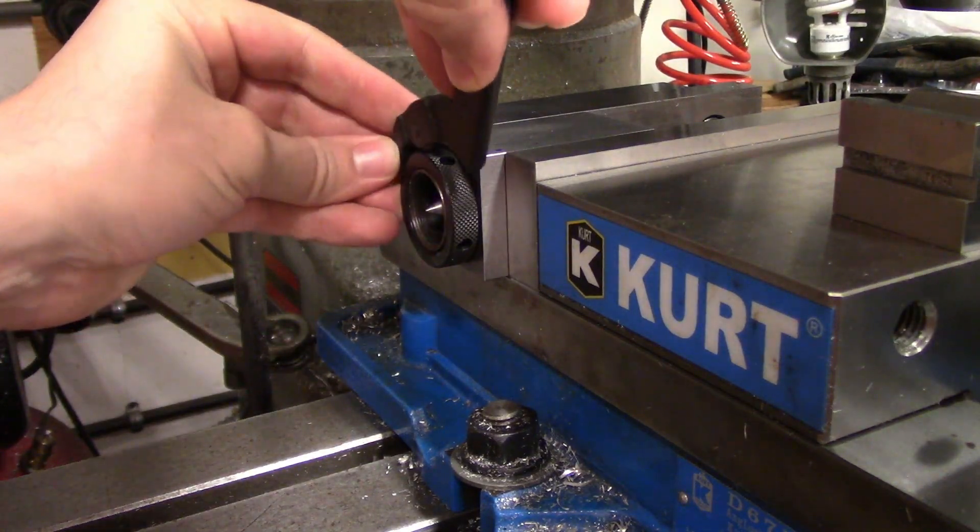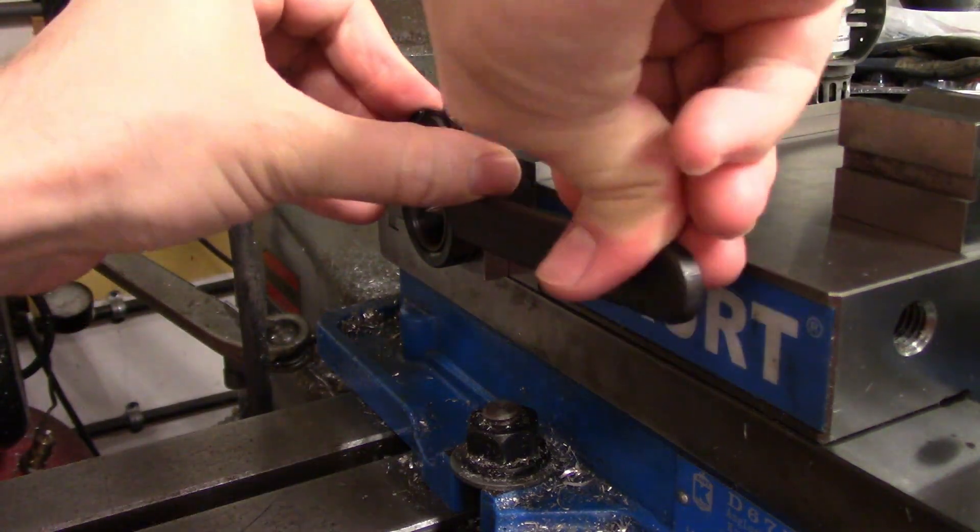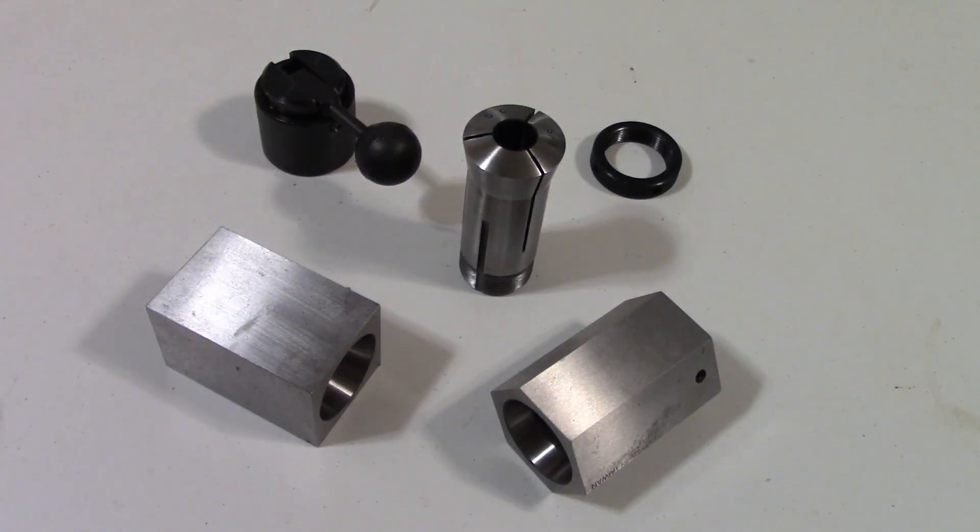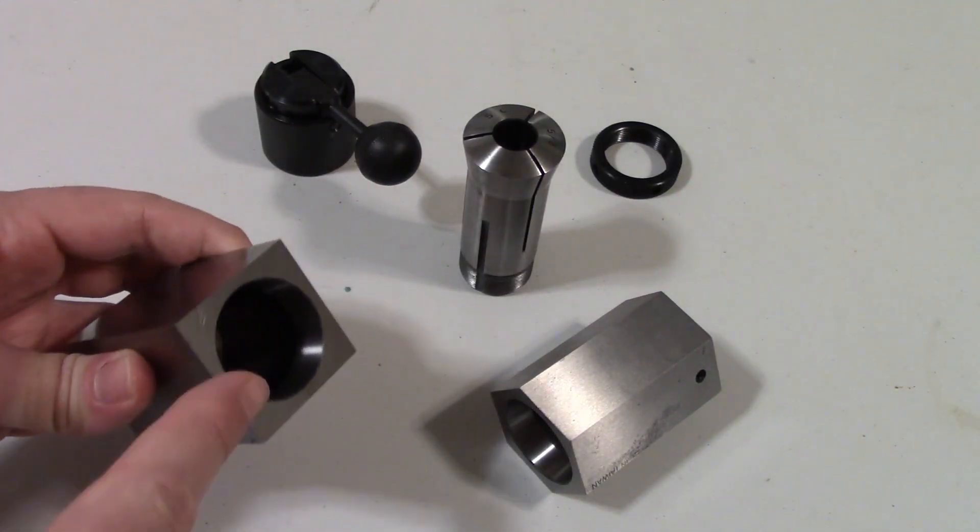The collet is closed with either a threaded ring, which requires a spanner wrench, or the cam lever. Both draw the collet in against the taper in the block.